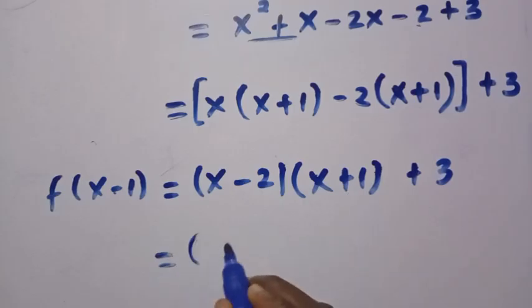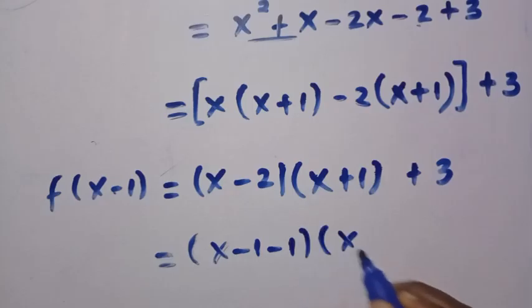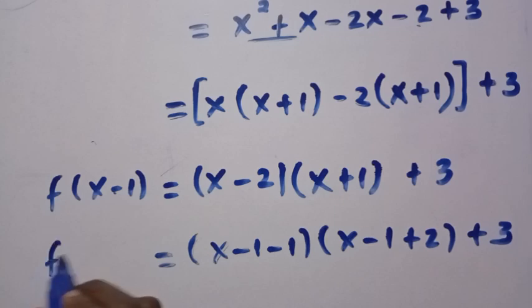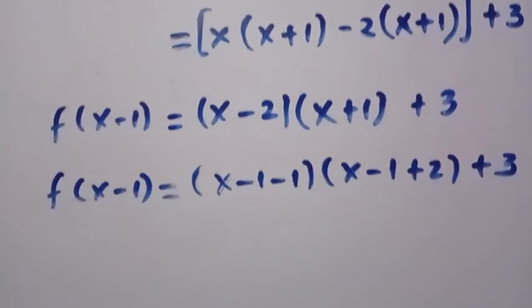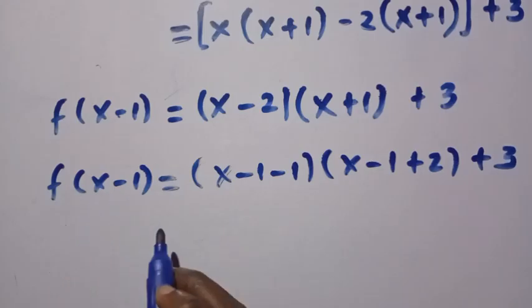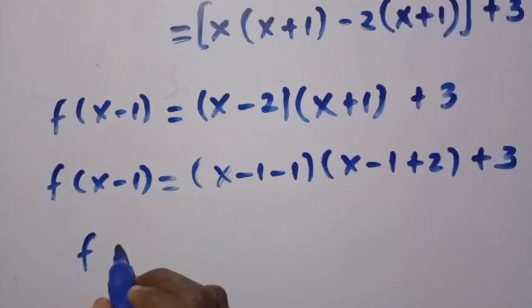So this equals x minus 1 minus 1, bracket x minus 1 plus 2, then plus 3. Everything equals f of x minus 1. Then we have to change x minus 1 to x, since we need to find f of x.